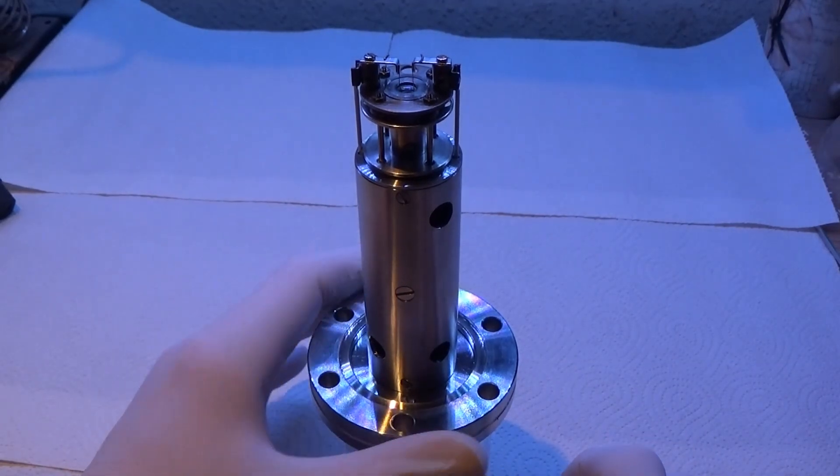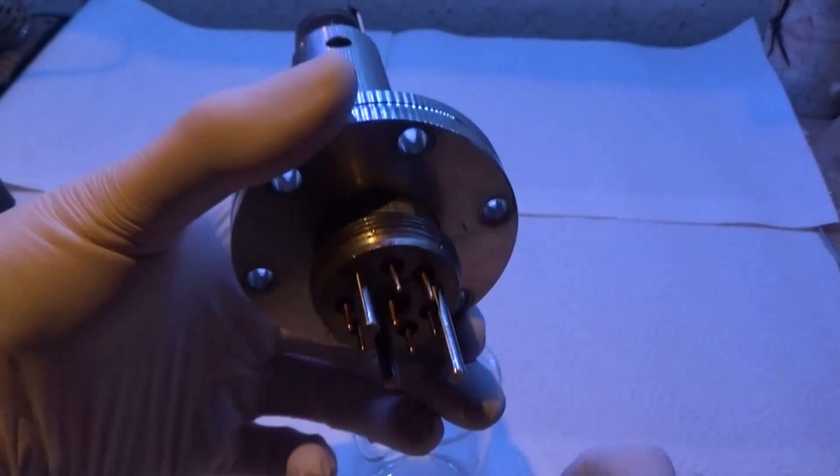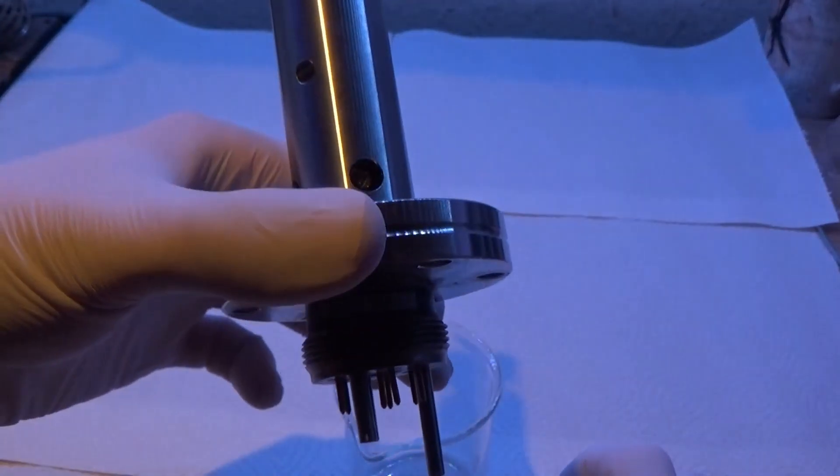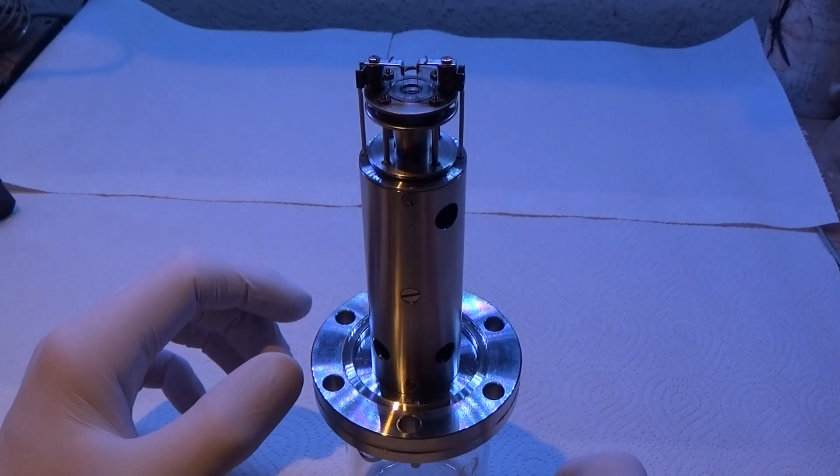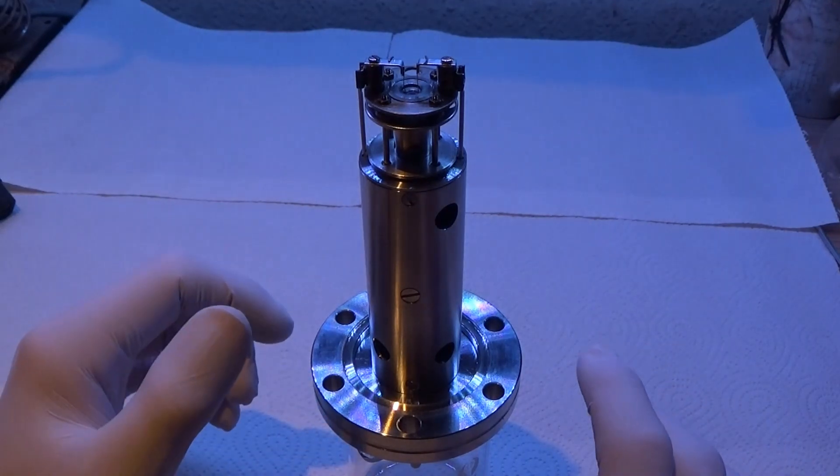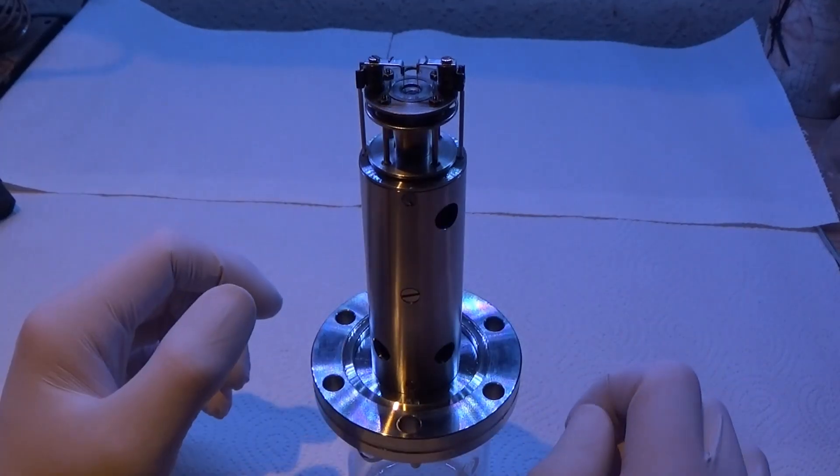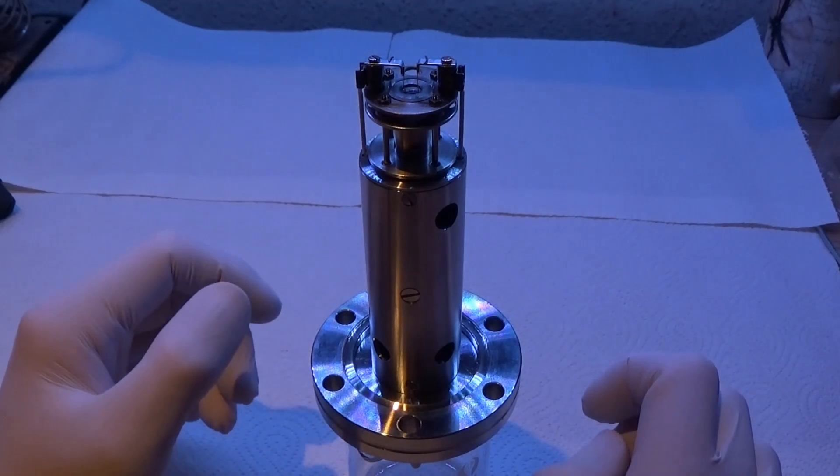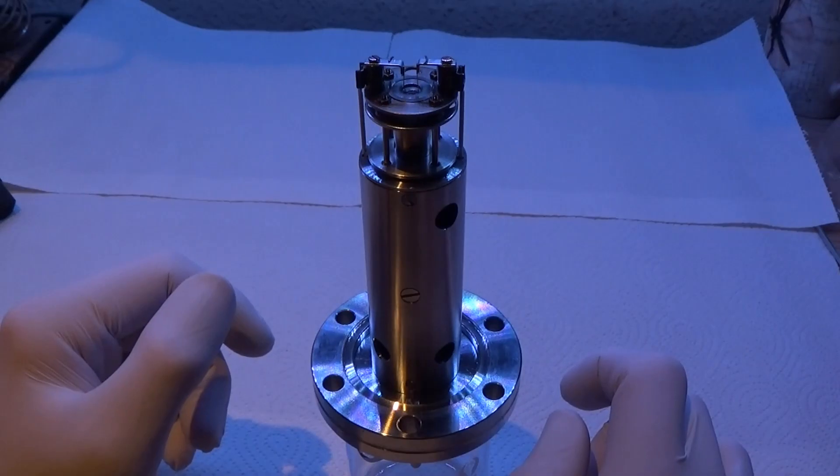This is a Balzers QMA 064, what is known as a residual gas analyzer, also known as an RGA. It is a real mass spectrometer, albeit a tiny one, but it's usually used specifically for diagnosing vacuum systems. They do also have roles in research as small, cheap mass spectrometers for atmospheric analysis, typically.